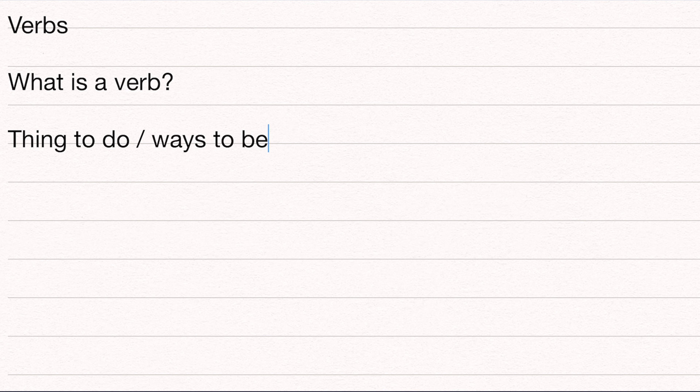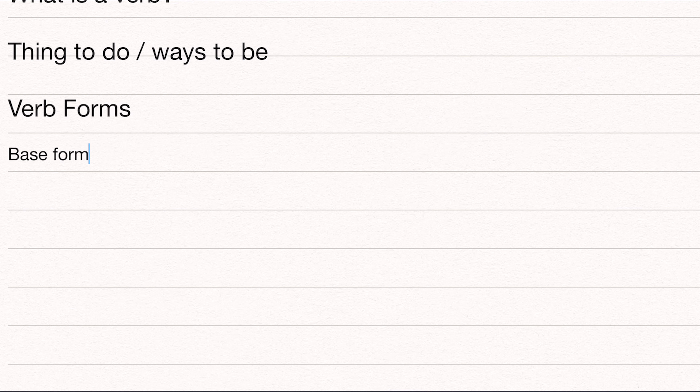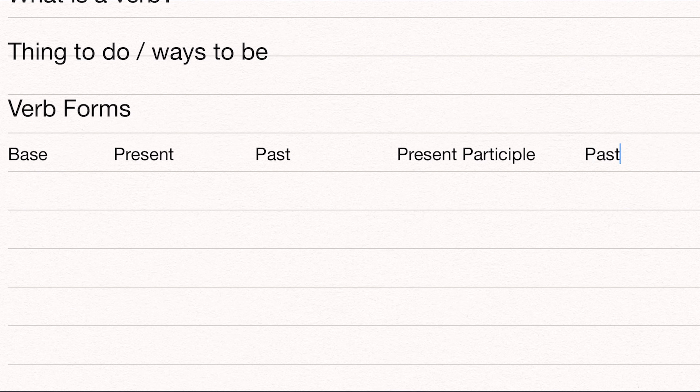The important thing to pay attention to when we start learning about how verbs work is verb forms. Nobody likes verb forms — it's okay, they're still important. We have base form, which is the form you're going to see when you look something up in the dictionary. We also have present and past, and then we have present participle and past participle. Those are a little harder.